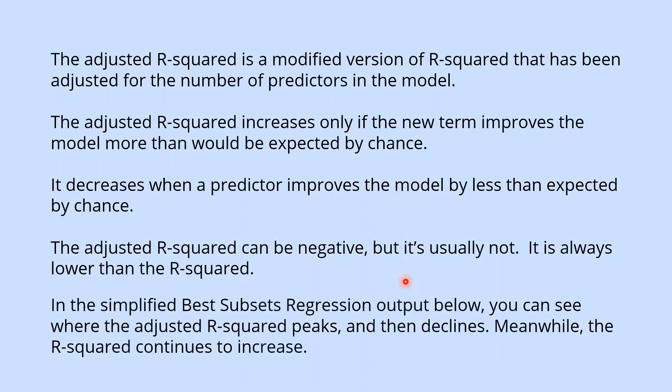In the simplified best subset regression output below, you can see where the adjusted R2 peaks and then declines. Meanwhile, the R2 continues to increase.